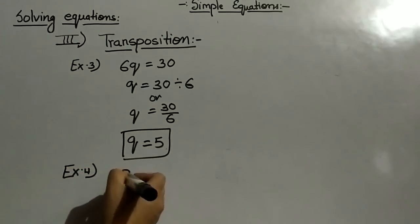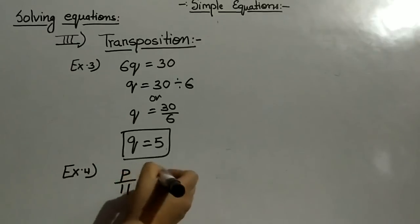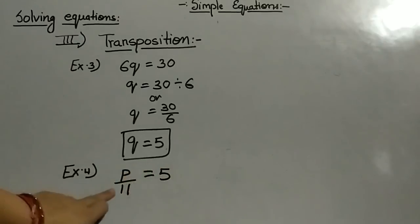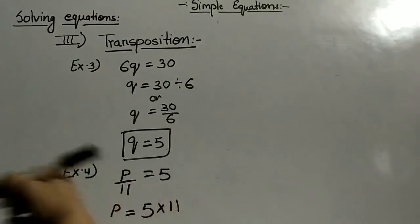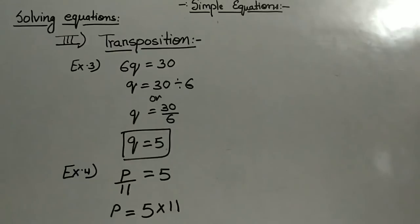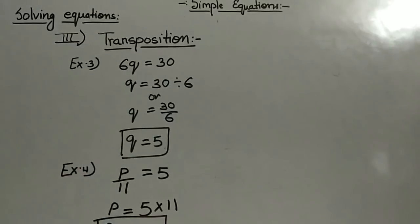Next example: p upon 11 is equal to 5. Here 11 is in the denominator, so when transposed it goes to the numerator as multiplication. So p equal to 5 times 11, which is 55. I hope you must have understood the simple steps of solving simple equations. Thank you so much.